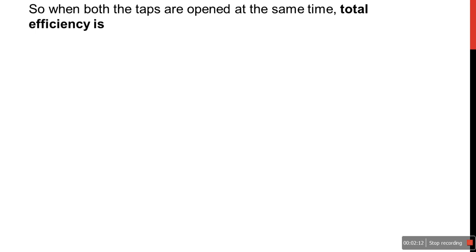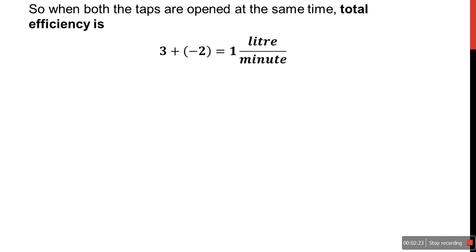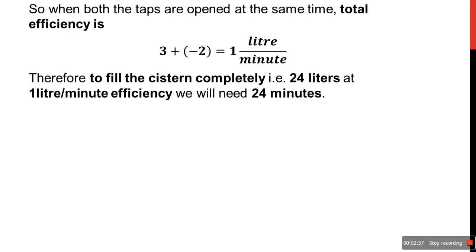When both taps are open, we add both efficiencies. We are filling the tank at 3 liters per minute and emptying it at minus 2 liters per minute. So 3 plus (minus 2) equals 1 liter per minute — that is the total efficiency. Therefore, to fill the system of 24 liters at 1 liter per minute, the time required is 24 minutes.